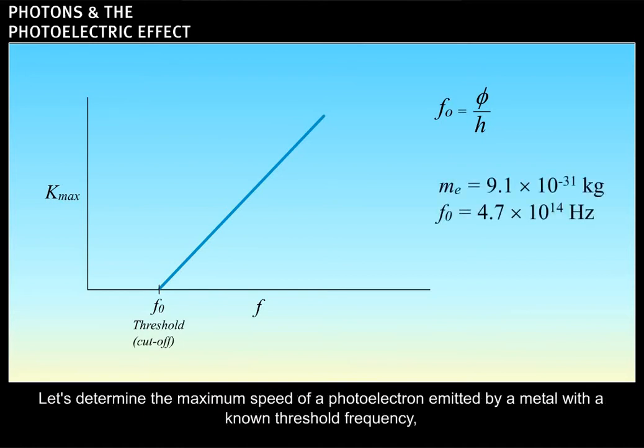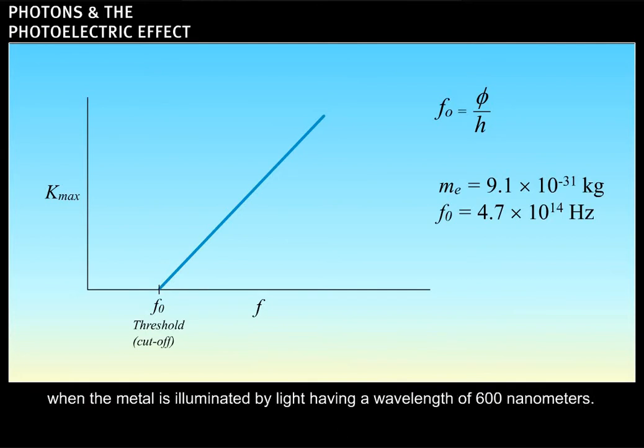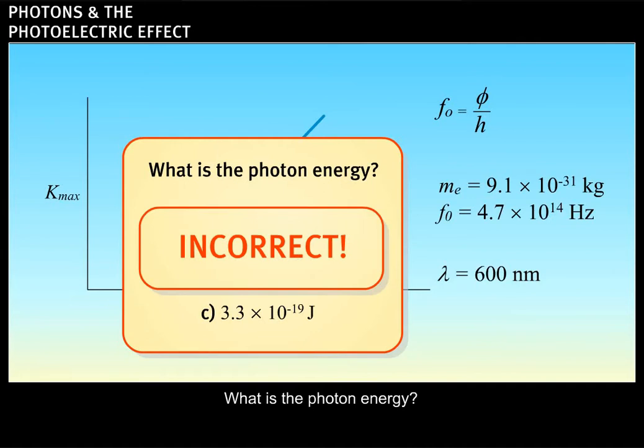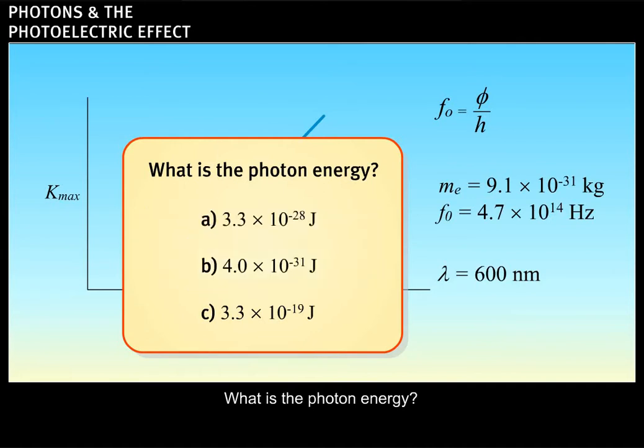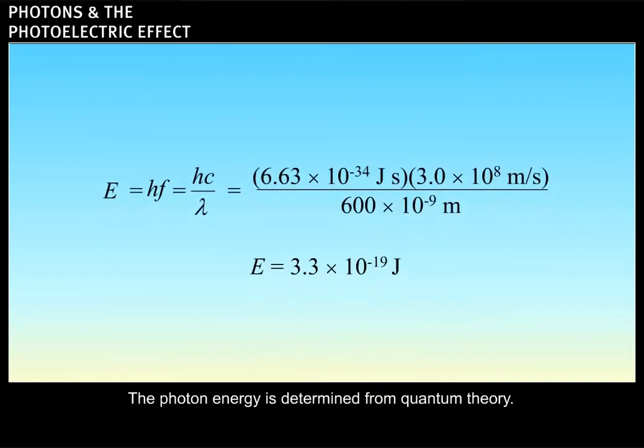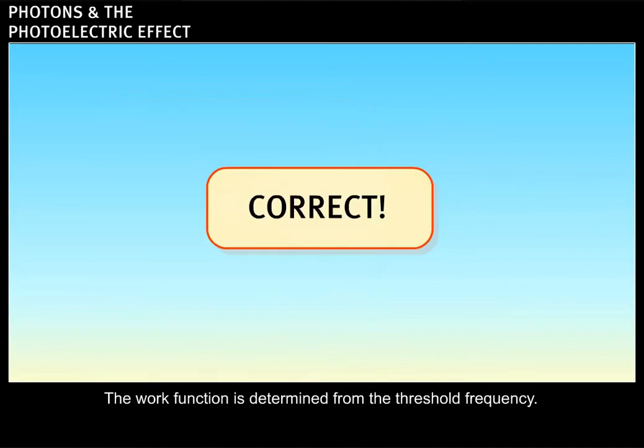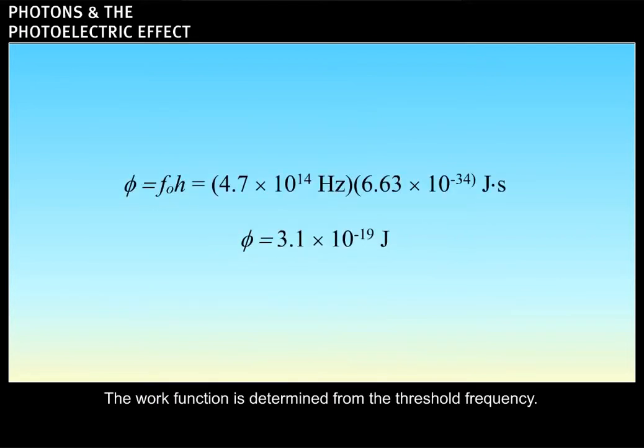Let's determine the maximum speed of a photoelectron emitted by a metal with a known threshold frequency when the metal is illuminated by light having a wavelength of 600 nanometers. What is the photon energy? Correct. The photon energy is determined from quantum theory. What is the work function? Correct. The work function is determined from the threshold frequency.